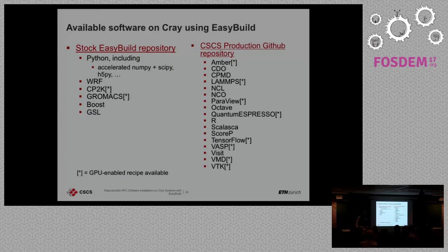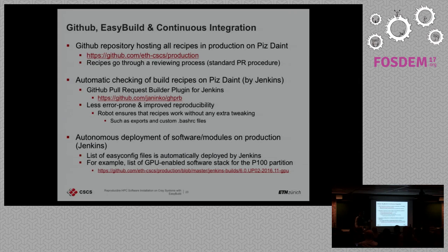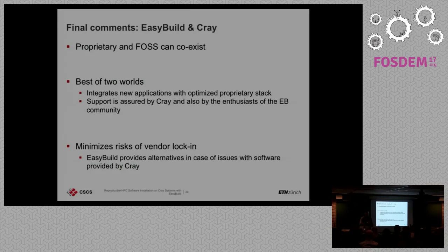This is the list of software you can find for Cray on the stock EasyBuild repository — meaning we have already contributed back. We also have our own GitHub repository with our recipes. We have a GitHub repository where people can open pull requests and contribute back. For Piz Daint specifically, we have automatic checking of recipes using the GitHub pull request builder plugin — we check everything before merging to master — and we also have autonomous deployment of software on the system.